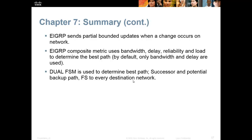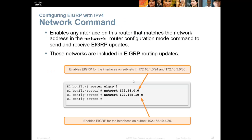For your basic knowledge, you only need to know a few things. Make sure you understand how to turn it on — we turn it on with the router EIGRP 1 command, and that number one is the autonomous system number. In order to form an adjacency and start sharing information, our autonomous system number has to be the same. Our hello time also has to be the same. If my hello time is 10 and yours is 5, we will not form an adjacency.